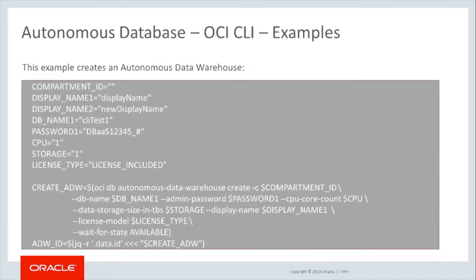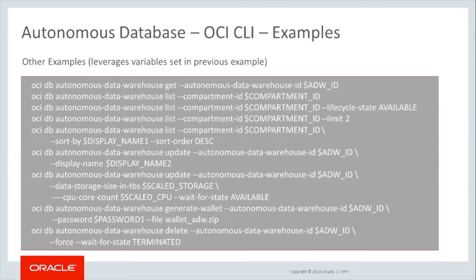This example OCI CLI call creates the Autonomous Database. Notice that variables are defined including all the parameters required to create an Autonomous Database. Then the command OCI DB Autonomous Data Warehouse Create with parameters is run. In this slide you can see examples of calls for some of the other supported OCI CLI commands. The format is always the same — starting with the OCI DB call, then specify the database service, in this case Autonomous Data Warehouse, followed by the command, parameters, and associated variables.